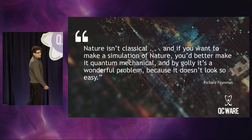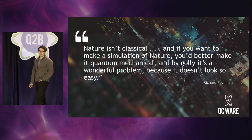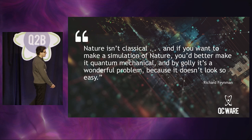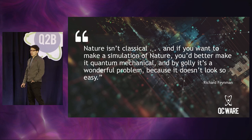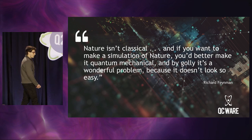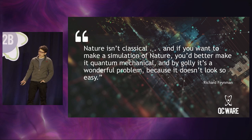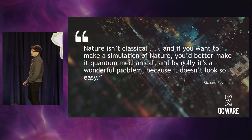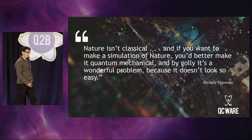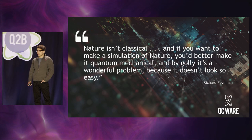Feynman said that nature isn't classical, and if you want to make a simulation of nature, you'd better make it quantum mechanical. And by golly, it's a wonderful problem because it doesn't look so easy. Feynman was looking ahead at the time — he was a theoretical physicist who did a lot of work in particle physics, and there are still a lot of particle physics problems, as well as quantum gravity problems, that we don't know how to solve. They are quantum mechanical in nature, so one of the best ways to tackle them computationally would be to have a device that natively incorporates all these properties.